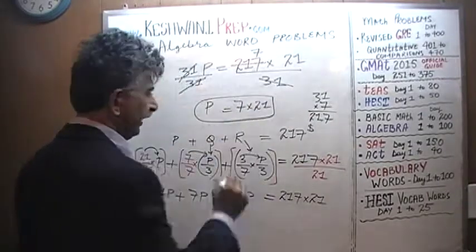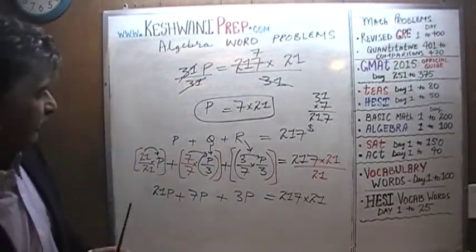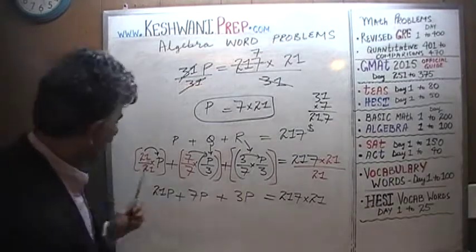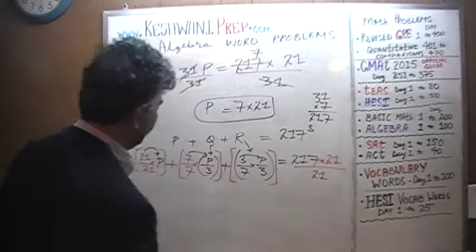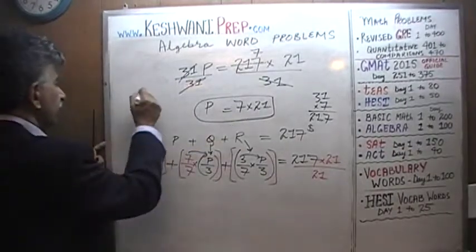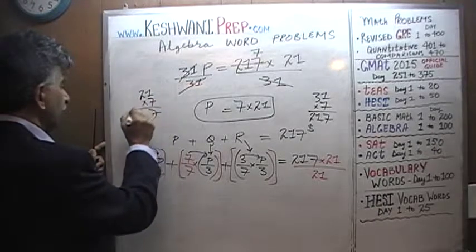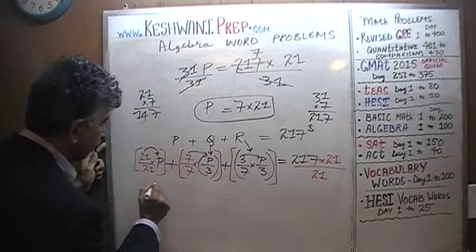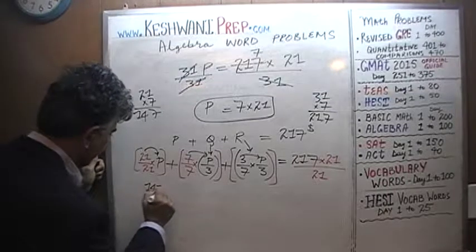P equals 7 times 21. They all have to add up to 217. How much is 21 times 7? 21 times 7 is 147. So P is 147.